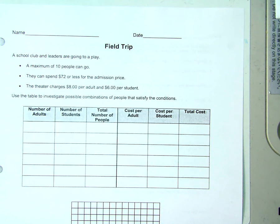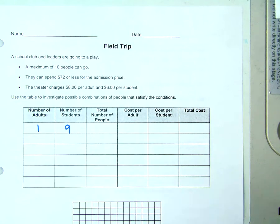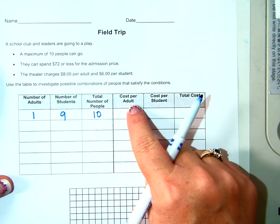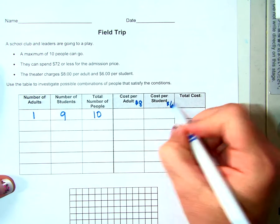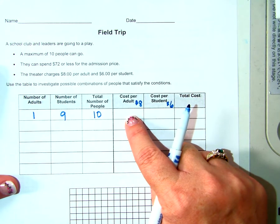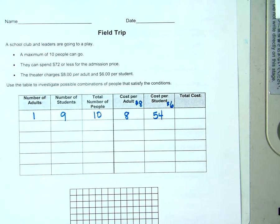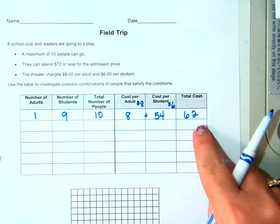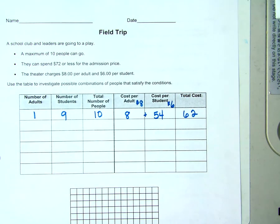How many adults are going? One adult. If one adult is going, how many students are going? Nine. Why do you say nine? Maximum is 10. So what's the total number of people? Ten. What is the cost per adult? $8. And what's the cost per student? $6. If we know one adult is going, how much is it going to cost for the adults? $8. How much is it going to cost for the students? $54. So what's the total cost? $62, right? Does that work? How do you know it works? $72 or less and 10 people. We have 10 people.